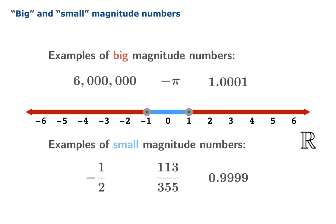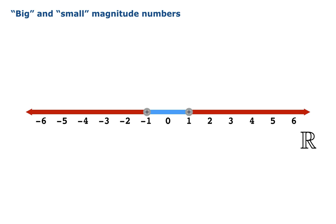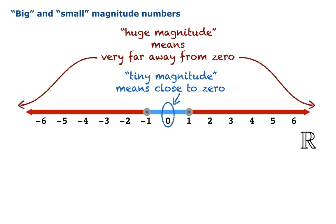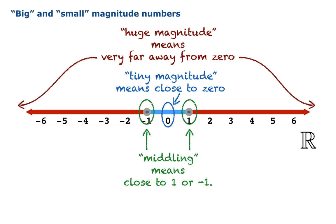You could come up with your own descriptive terms to talk about numbers — say, huge magnitude means very far away from zero, tiny magnitude might mean close to zero, and maybe middling means close to 1 or negative 1. These are all rather informal ideas. Big and small, we have these specific definitions, but we could describe relative positions of numbers using other descriptive terms.